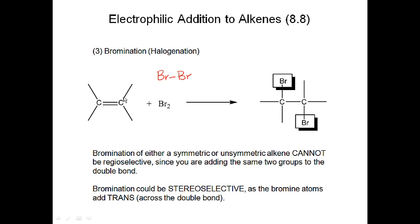Regarding regioselectivity, bromination cannot be regioselective because I'm adding two bromines to the double bond. It doesn't matter whether I add bromine to the left or right carbon first — I'm still adding two bromines and get the same product. I won't get products that are structural isomers. However, could it be stereoselective? Yes — because these two bromines will add trans across the double bond.